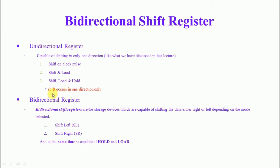In this lecture we discuss about the bi-directional shift registers. Bi-directional shift registers are storage devices which are capable of shifting the data either right or left depending on the mode selector. If the mode value is shift left, shifting is done to the left; if shift right, shifting is done to the right. They are also capable of hold and load operations.